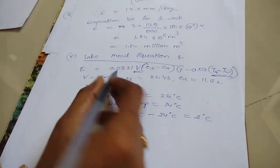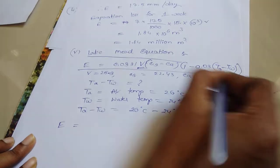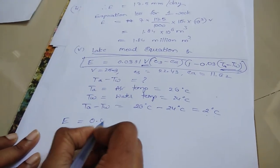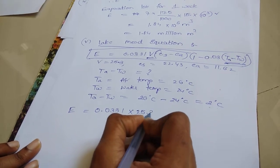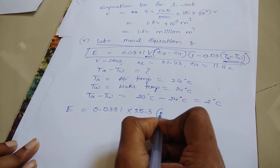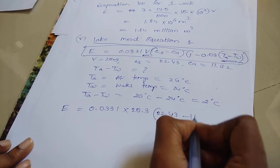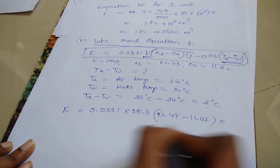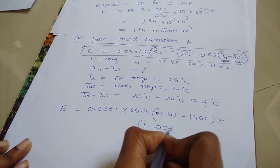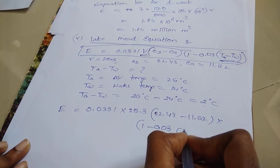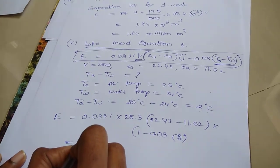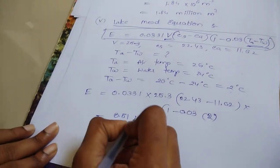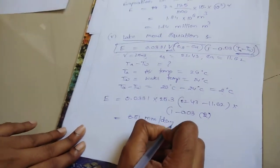So, substitute all the values in this equation. E equal to 0.0331 into V equal to 25.3 into ES 22.43 minus 11.62 into 1 minus 0.03 into TA minus TW value is 2. Substitute all the values. You got 8.51 mm per day.